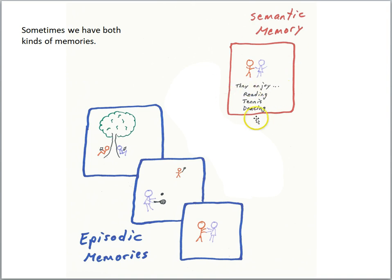This would be semantic information stored in our semantic memory—these are facts about this couple. Now if we were asked, 'How do you know that?' If we could retrieve episodic memories, then we would have those as well.